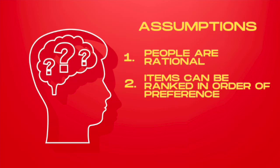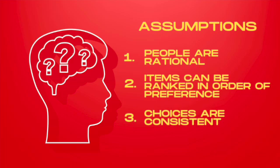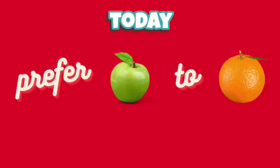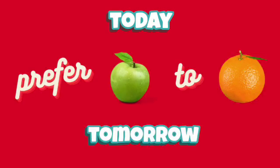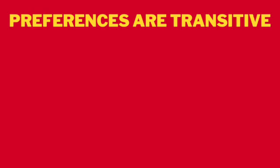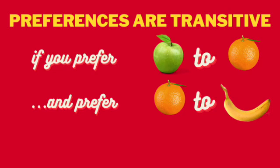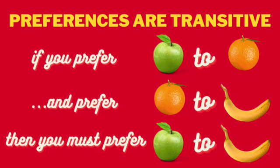Secondly, they assume that it is possible to rank items in order of preference, that people can actually choose and place them in an order. Thirdly, they assume that people make consistent choices. For example, if today they prefer apples to oranges, they will tomorrow. Fourth, economists assume that preferences are transitive. In simple terms, this means that if you prefer apples to oranges and also prefer oranges to bananas, then you must by definition prefer apples to bananas.